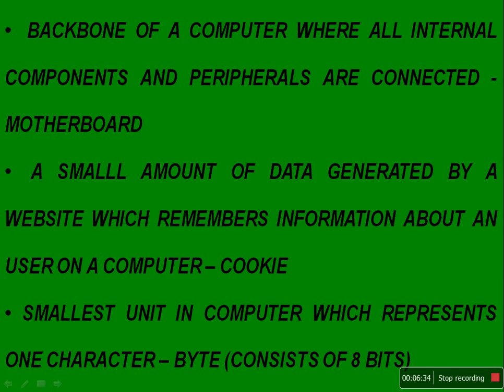The answer to the website data question is cookie. The smallest unit in a computer which represents one character — many wrote bit, but it's not bit, it's a byte. To represent any one character, whether numeric or alphabetic, we need 8 bits, and that is known as a byte. They were not asking the smallest unit in computer memory; they asked the smallest unit representing one character. The answer is byte, which consists of 8 bits.